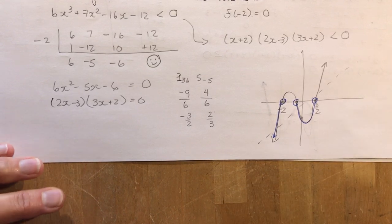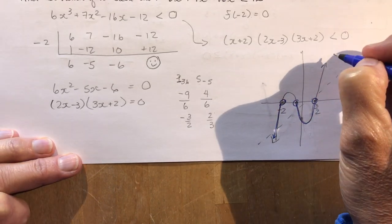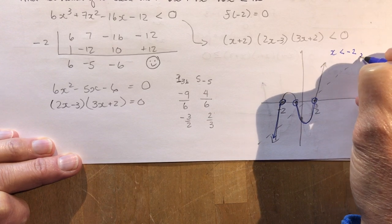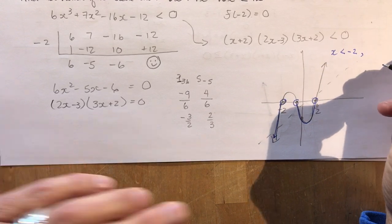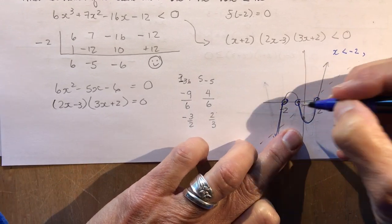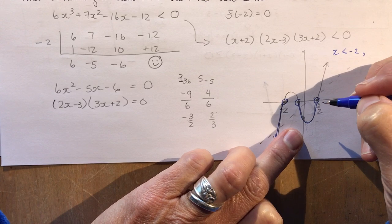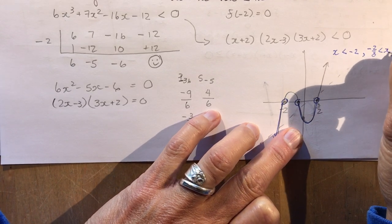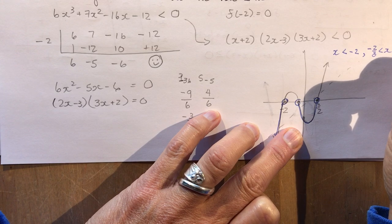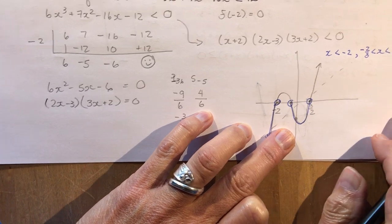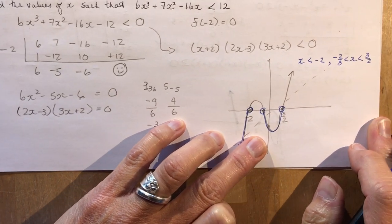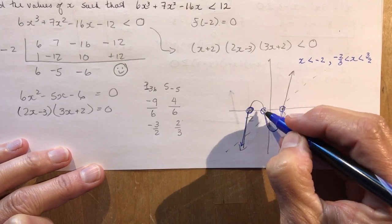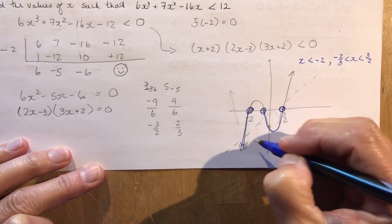The solution is x < −2 and −2/3 < x < 3/2. Make sure you look at your graph to confirm you have all intervals covered — the part less than −2 and the part between −2/3 and 3/2.